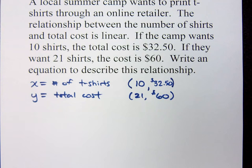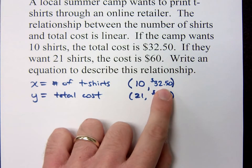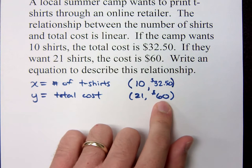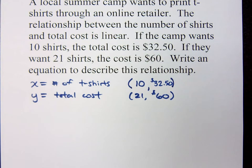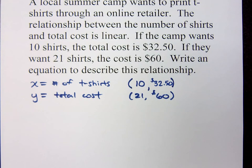I'm writing these as ordered pairs — if you order 10 shirts, this is the cost; you order 21 shirts, this is the cost. Since this is a linear relationship, these two points would fall on the same line. And you know how to write the equation of a line — this is just like the problems we did earlier. How can we get the equation of a line through just two points?